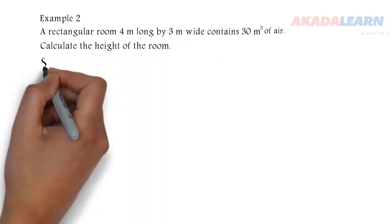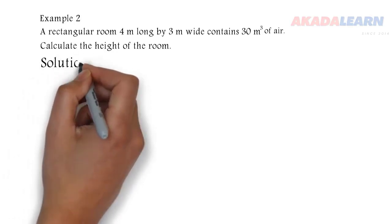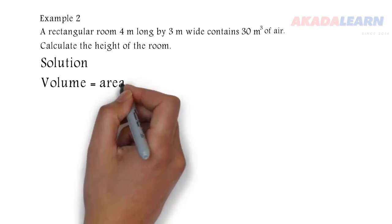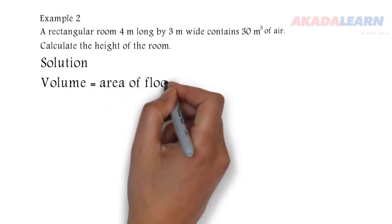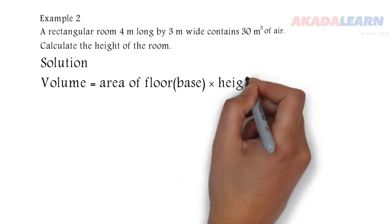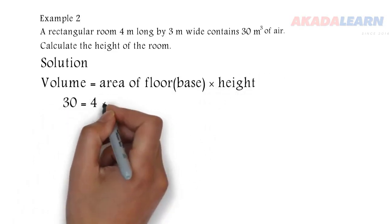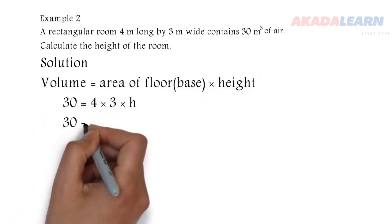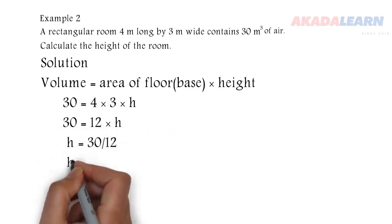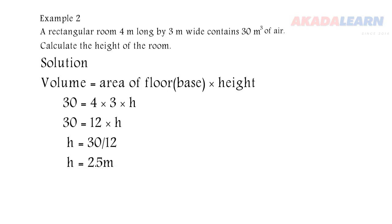Okay, so let's see how to do that. We know our formula already. The volume is equal to area of base—and the floor now is the base—times the height. So we substitute in the values. Our volume is 30. Area of base is 4 times 3, then times height. 4 times 3 is 12. We divide both sides by 12, and our height is given as 2.5 meters.